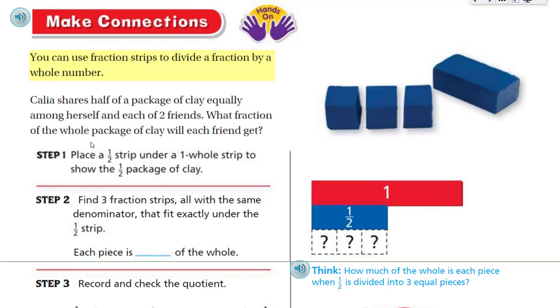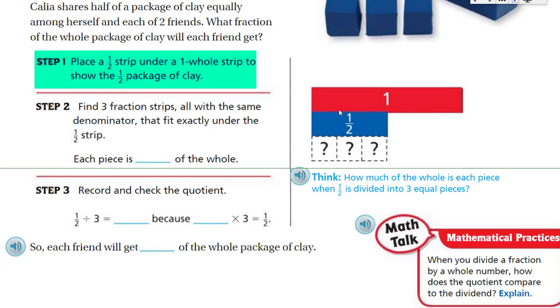This is make connections. You can use fraction strips to divide a fraction by a whole number. Let's look at Kalia shares half of a package of clay equally among herself and each of two friends. What fraction of the whole package of clay will each friend get? Well, it says here we place a half strip under a whole strip to show the half package of clay. So here the model shows us this. So it says find three fraction strips all with the same denominator that fit exactly under the half strip. And here you can see that we have three that fit underneath there.